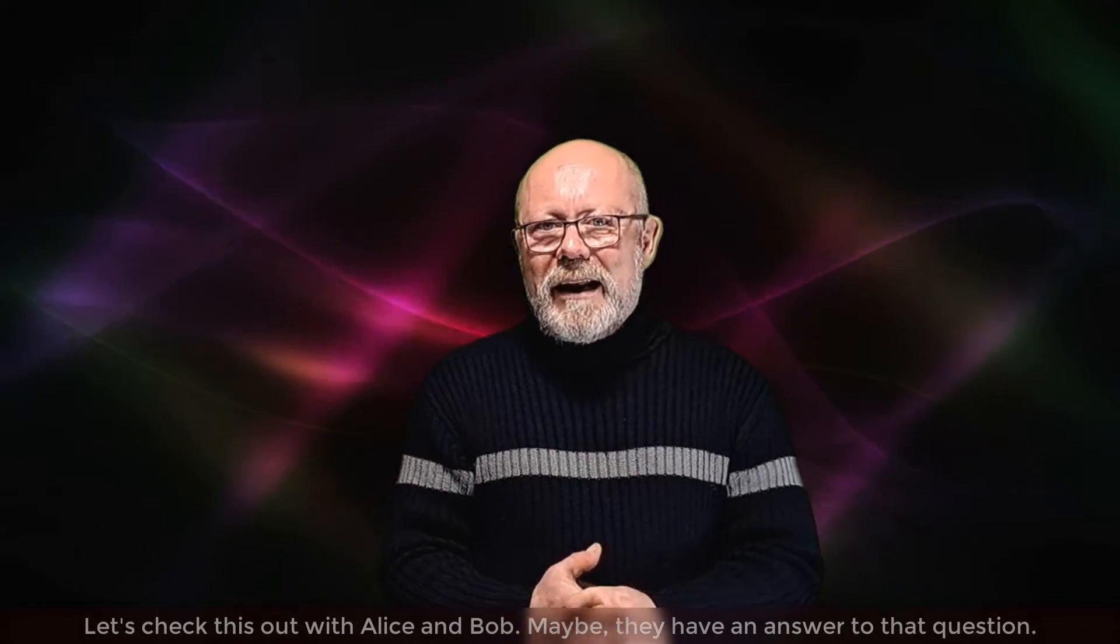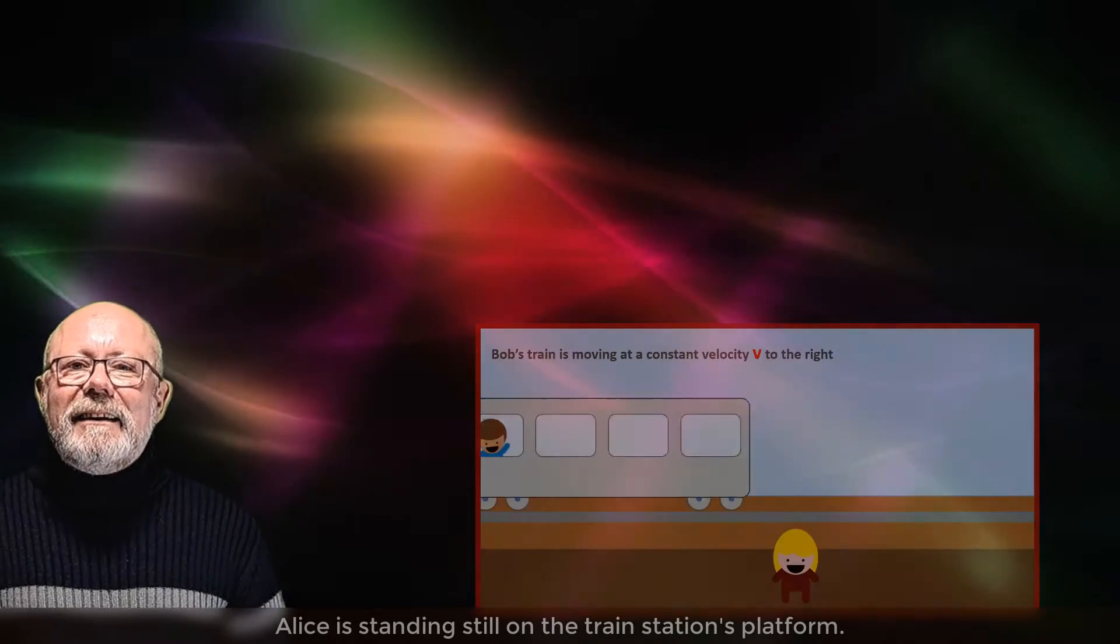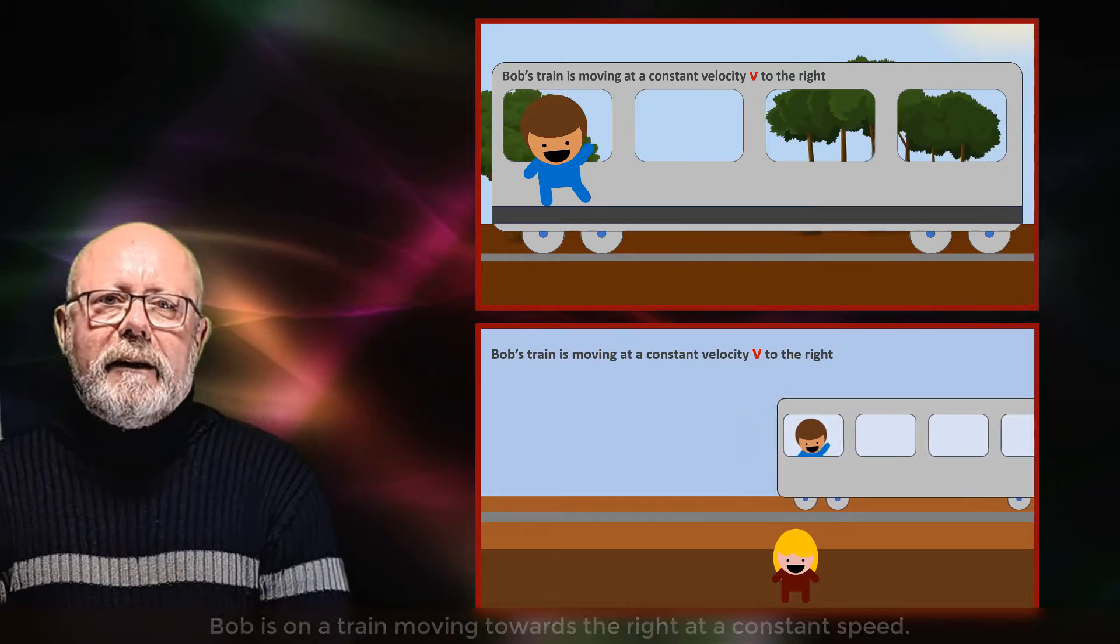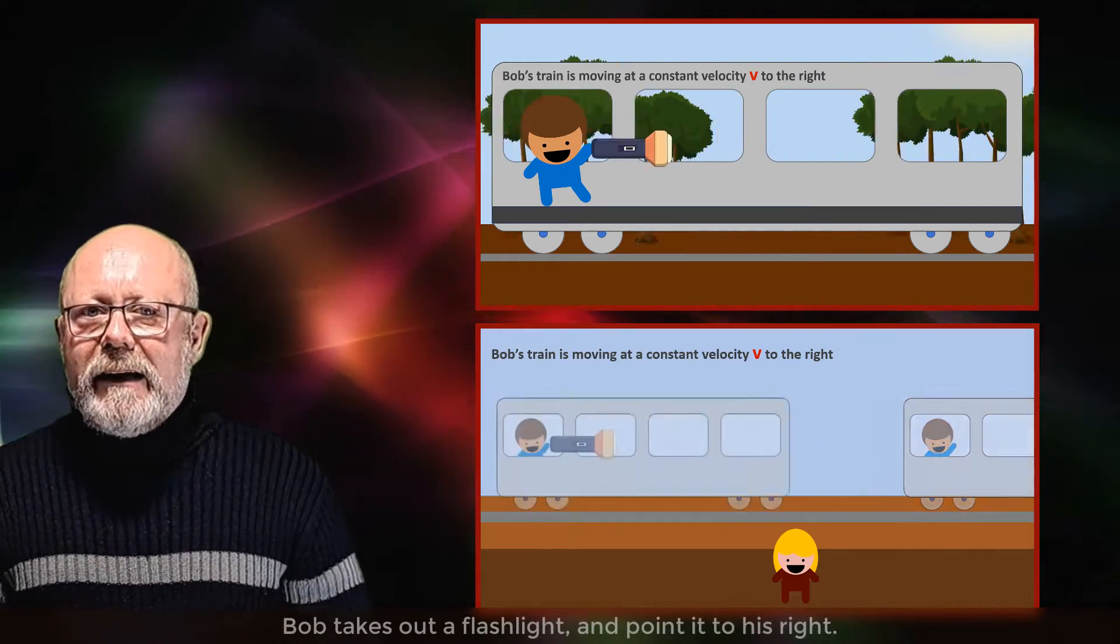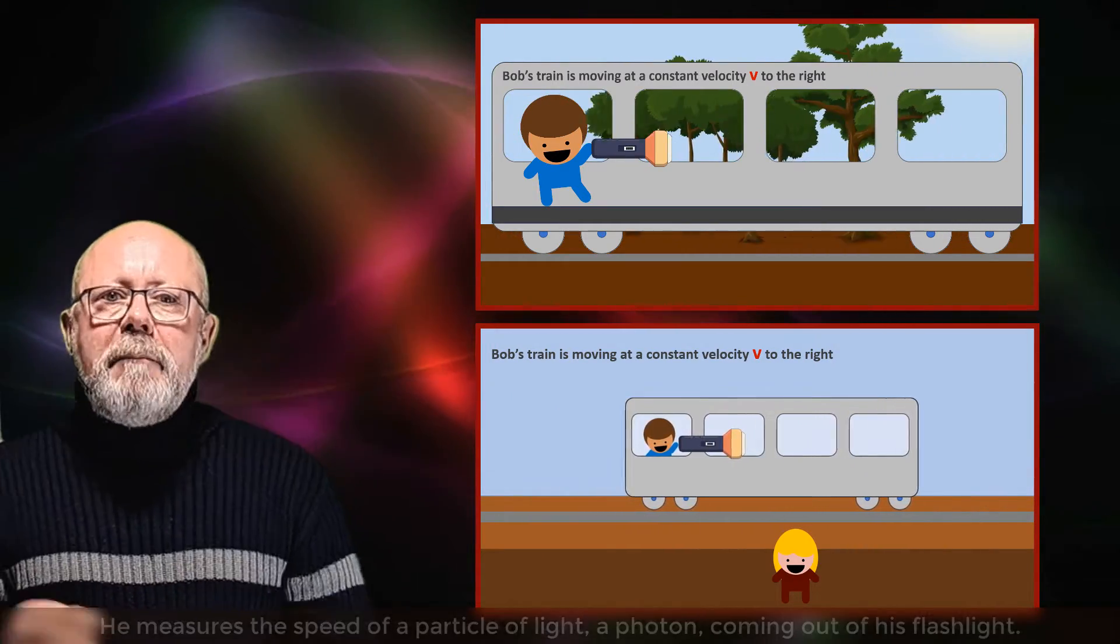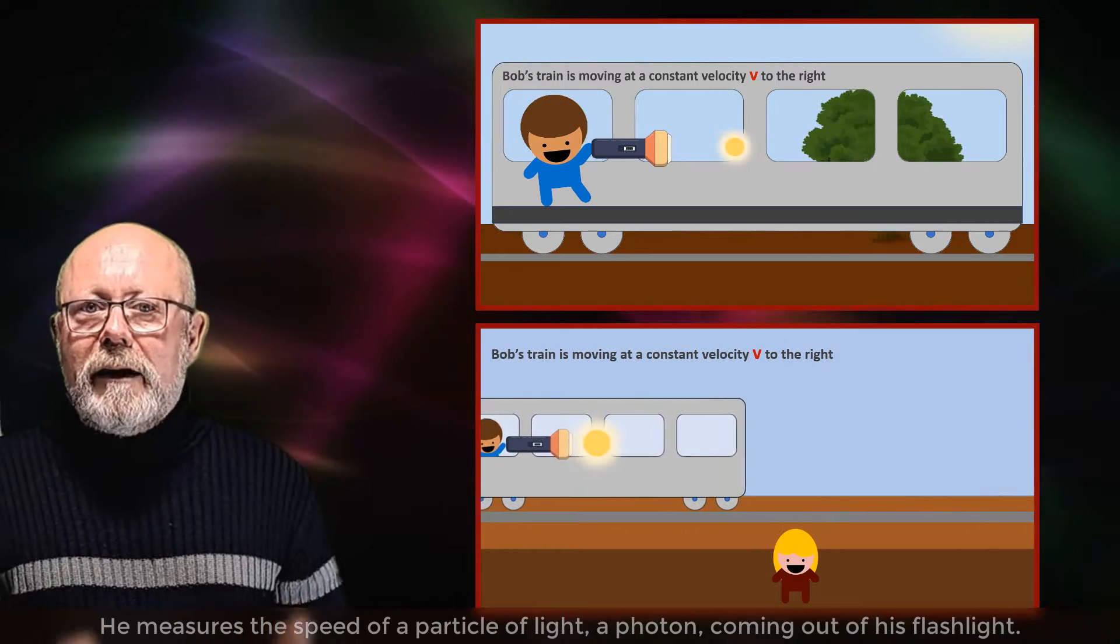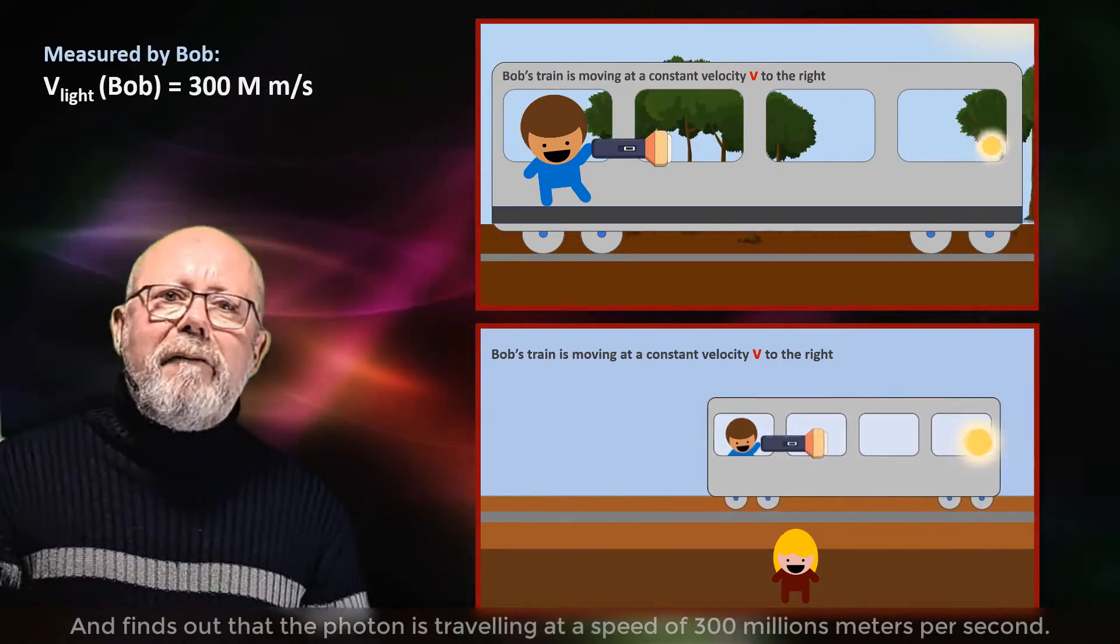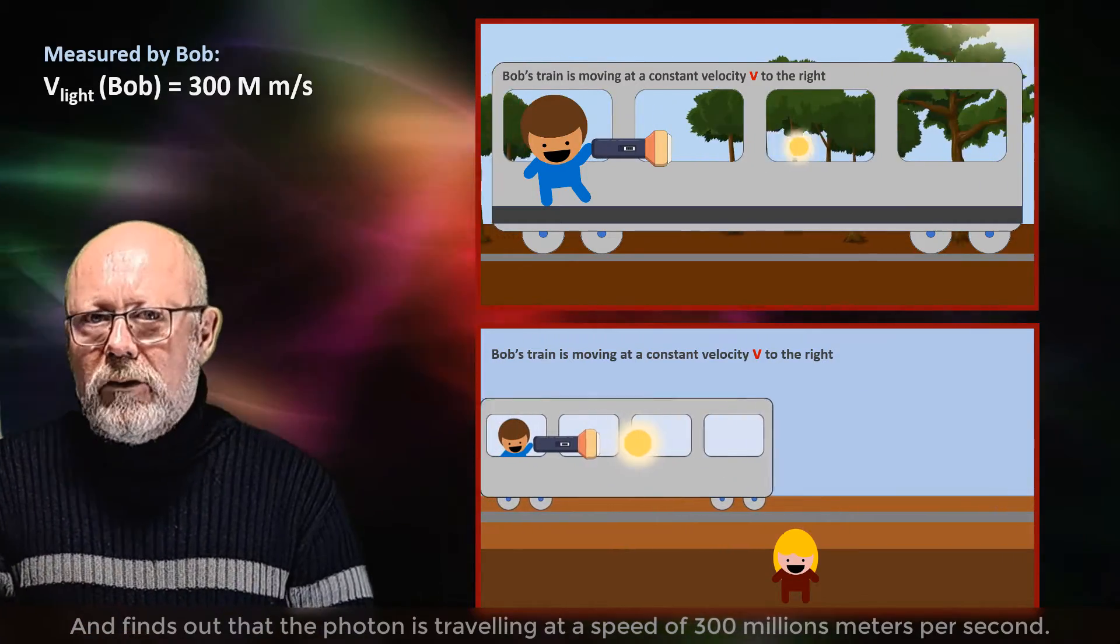But what does this invariance of the speed of light really imply? Let's check this out with Alice and Bob. Maybe they have an answer to that question. Alice is standing still on the train platform. Bob is on a train moving towards the right at a constant speed. Bob takes out a flashlight and points it to his right. He measures the speed of a particle of light, a photon, coming out of his flashlight,